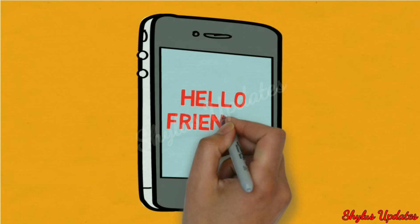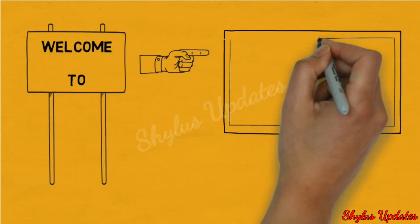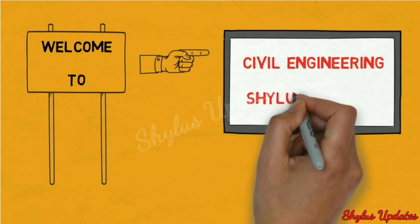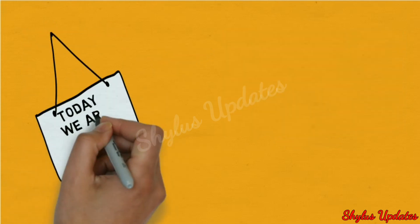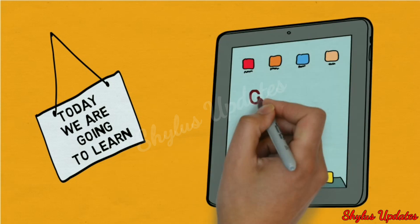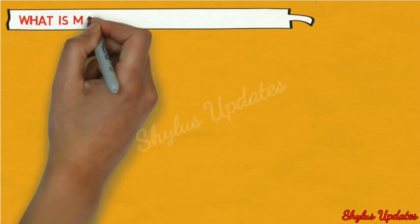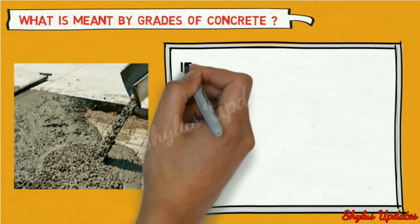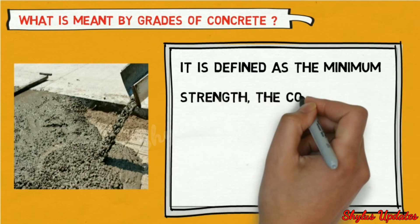Hello friends, welcome to Civil Engineering Shailu's Updates. Today we are going to learn grades of concrete. Grades of concrete is defined as the minimum strength the concrete must possess after 28 days of construction with proper quality control.